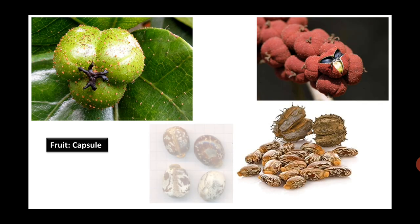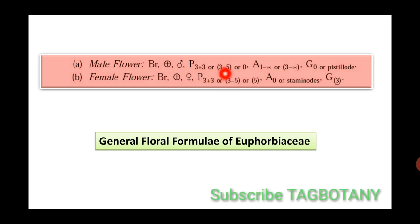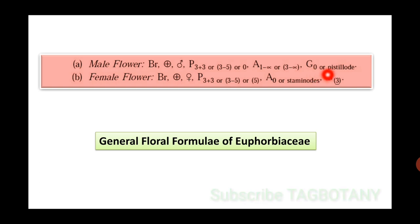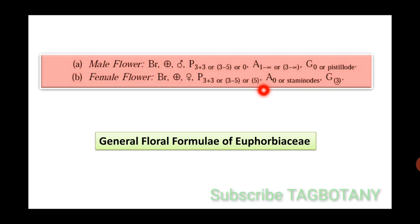The fruit is a capsule or regma, as in the case of the castor bean. The floral formula for Euphorbia: the male flower is bractiate, actinomorphic; perianth parts 3+3, free, or 3–5 or 0 (absent); androecium stamens 1 to infinite, or 3 to infinite (monadelphous); G0, meaning no carpels, or pistillode (sterile carpels) present. The female flower is bractiate, actinomorphic; perianth parts 3+3 or 3–5 united, or 5 gamopetalous; A0 or staminodes (sterile stamens); gynoecium tricarpellary, syncarpous, ovary superior.